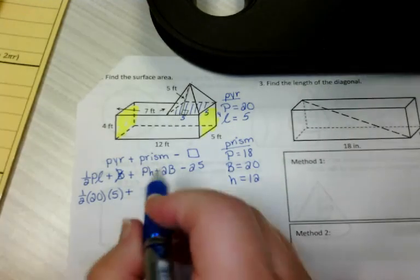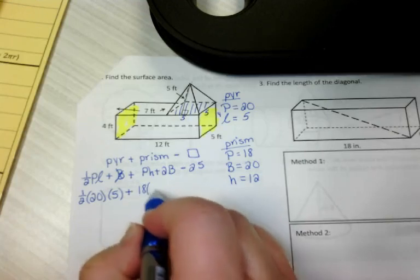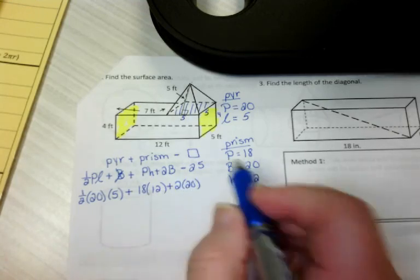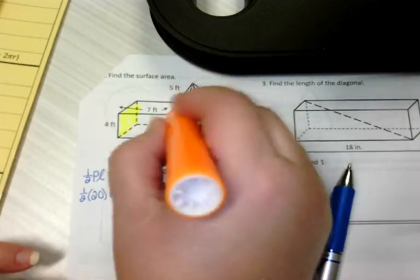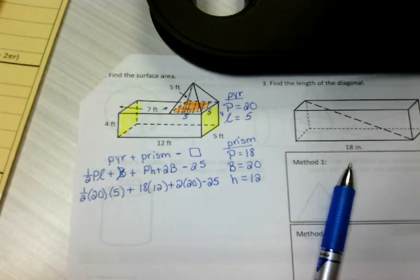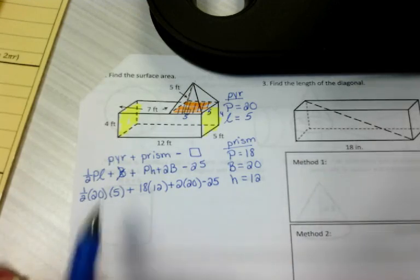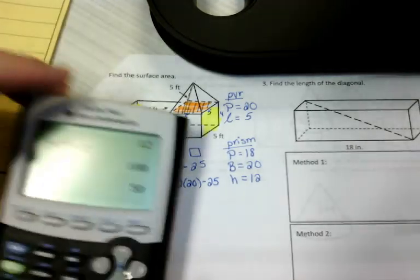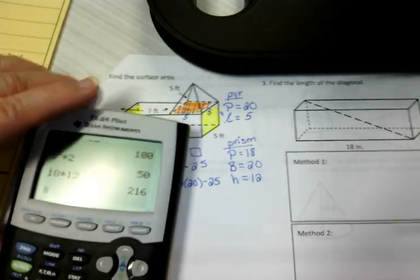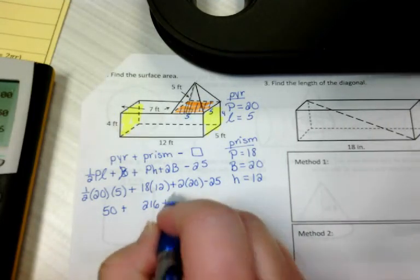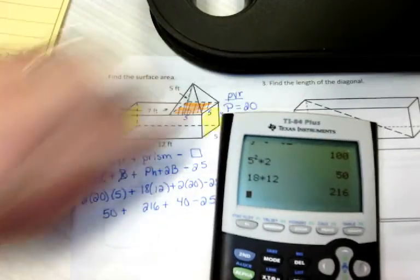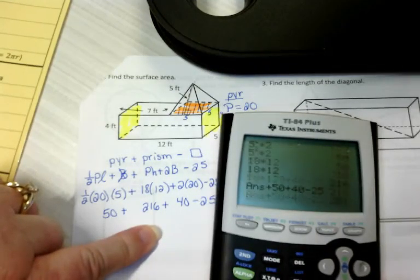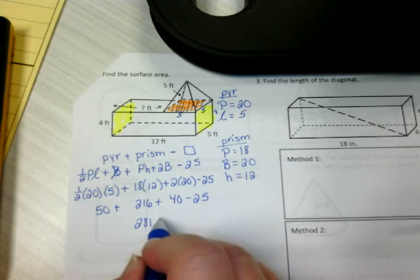And now we can do the prism. Perimeter, 18. Height, 12. Plus 2 bases. And then we're going to subtract the base of the pyramid right here, because that's not part of the surface that's going to get covered with paint. And now we just calculate. Half of 20 times 5 should be 50. 18 times 12, 216. 2 times 20, minus 25. I'll just throw all that in the calculator. 50 plus 216 plus 40 minus 25 gives me 281 square feet, because it's area.